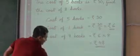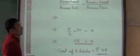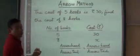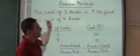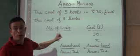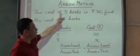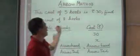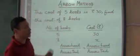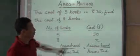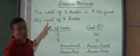Now we move on. What we want to learn today is the new method, which we are calling the arrow method. We will take the same question: the cost of 5 books is rupees 30, find the cost of 8 books. So there are two things here — one is the book and one is the cost.